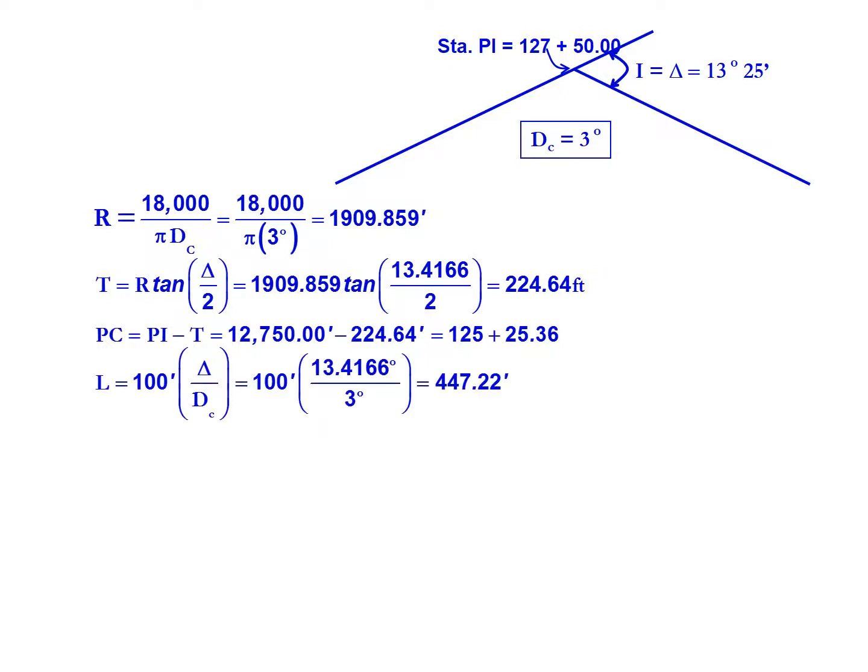We can also calculate our length. This is 100 feet multiplied by our intersecting or deflection angle of 13.4166 degrees divided by 3 degree curve, gives us a length of our curve of 447.22 feet.